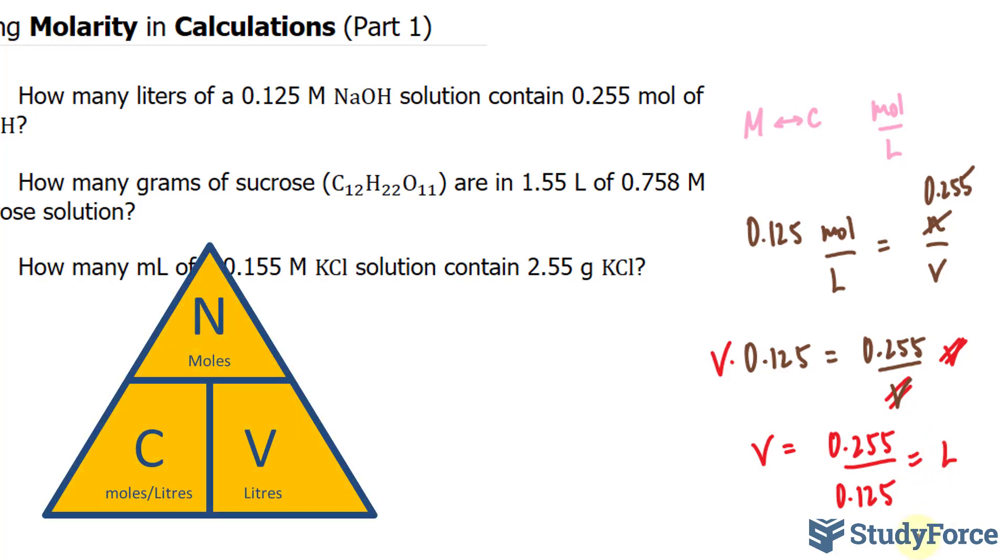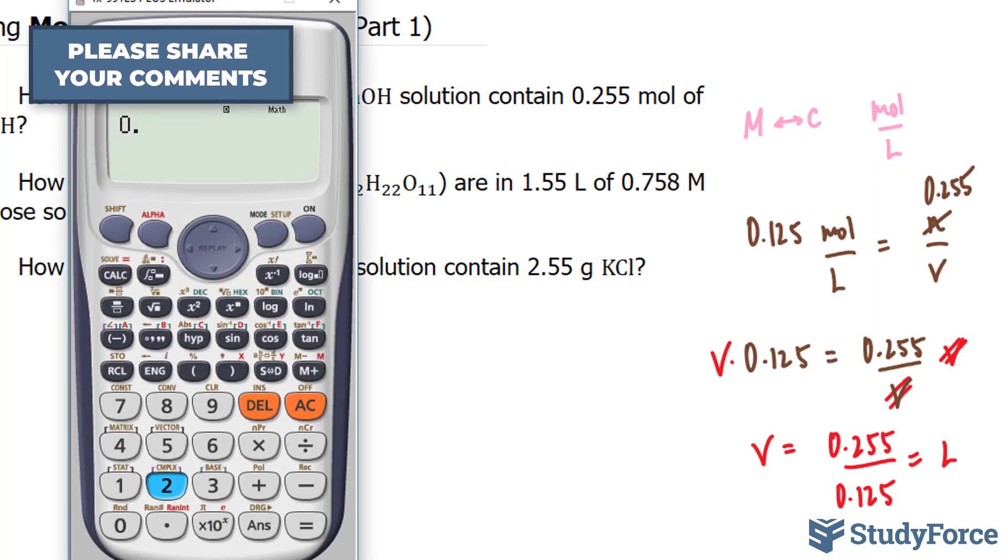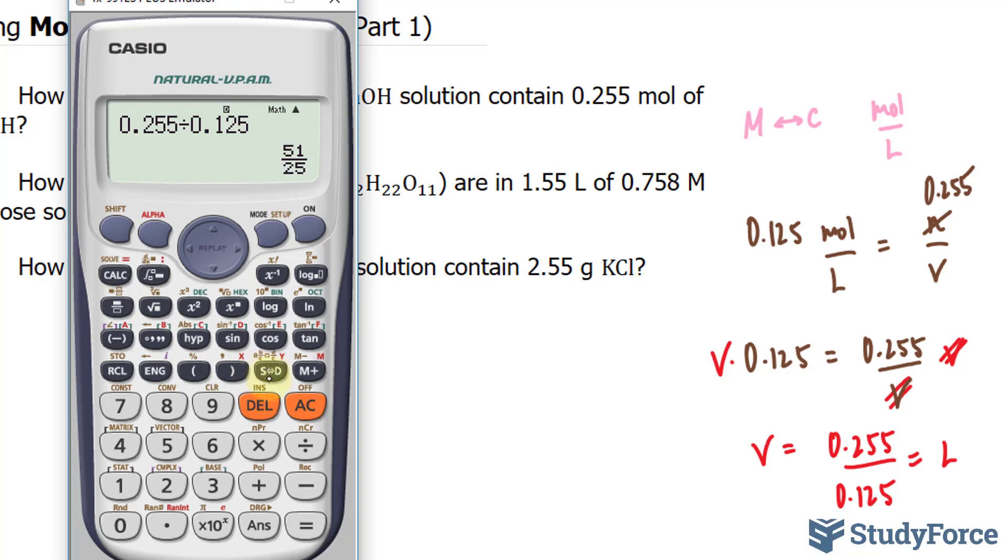Now of course a lot of you are introduced to small triangles that will help you with calculations. So if you have a triangle that will help you with this calculation, feel free to use it. 0.255 over 0.125 gives us 2.04 liters.